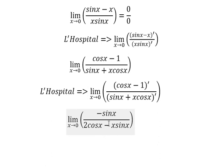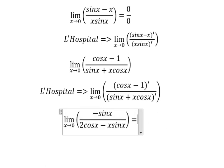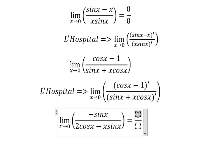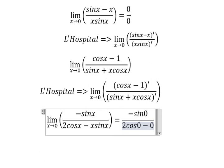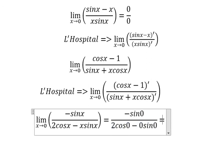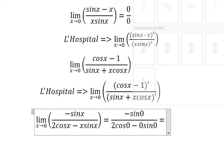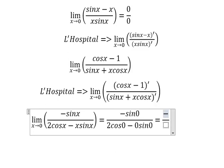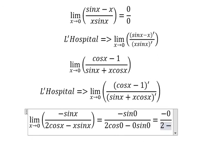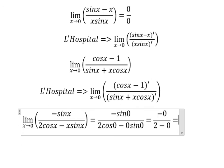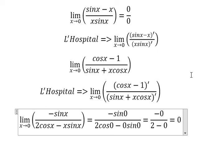Now we can put zero in here. On the numerator we get negative sin 0, which is 0. On the denominator, 2 cos 0 is 2, and we have 0 for the x term. The answer is zero. That's it, the end, thank you for watching.